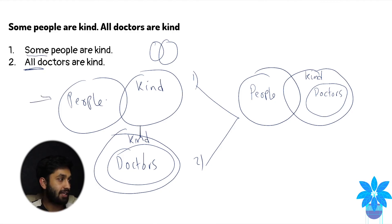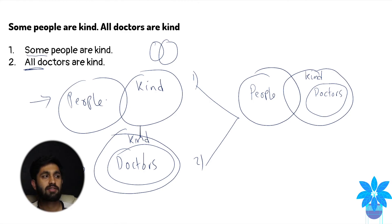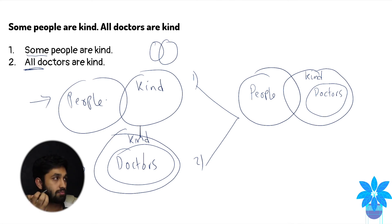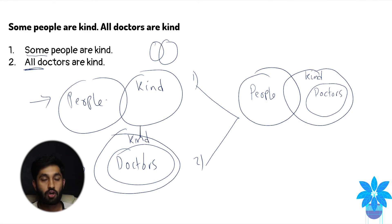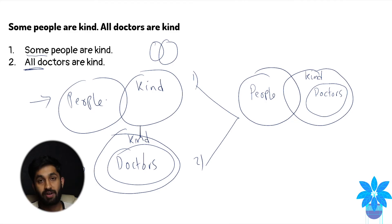Some of you are probably thinking: why doesn't doctors overlap with people? Well, according to the statements we can't overlap them, because that would mean some doctors are people, which we don't know for sure. It's a possibility, but there isn't enough information given. So that conclusion — some doctors are people — would be incorrect.